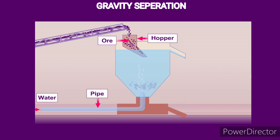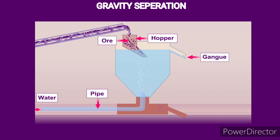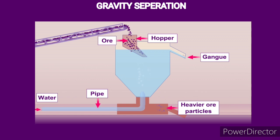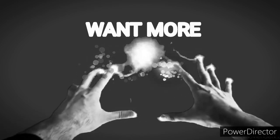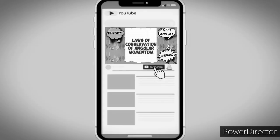Gang particles are lighter and are carried away by the current of water at the top.